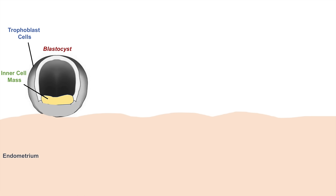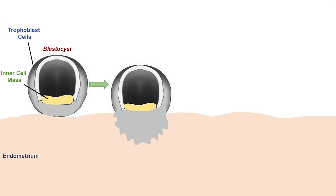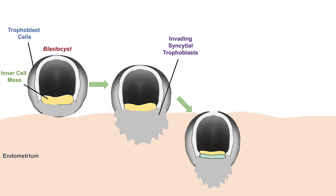As the blastocyst develops, the trophoblast cells differentiate into syncytiotrophoblasts and cytotrophoblasts. The syncytiotrophoblasts become invasive and they release digestive enzymes, allowing the blastocyst to implant into the endometrium of the uterus. Eventually, these syncytiotrophoblasts will erode the endometrial lining and will actually settle within the endometrial layer of the uterus.